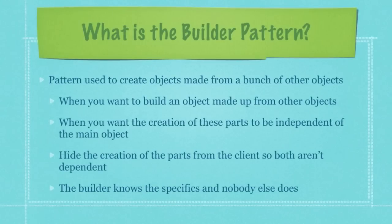The builder pattern is used to create objects made from a bunch of other objects. When you want the creation of these parts to be independent of the main object, and also to hide the creation of the parts from the client so both are not dependent upon each other. Whenever you create a builder pattern, the builder part knows all the specifics, and every other class involved knows nothing about the specifics of the final object you're going to create. It sounds way more complicated than it is, and now you're going to see how simple it is.